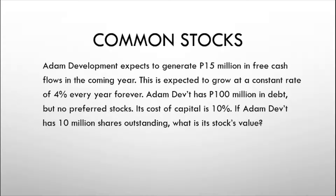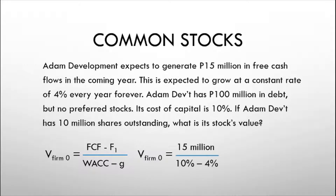To arrive at the value of the common stock, we should start with the value of the firm. We can use the Gordon growth model customized for firm value. The firm value in year 0 is equal to the free cash flows to the firm in year 1 divided by WACC minus the constant growth rate. This equals 15 million divided by 10% minus 4%, which gives us a firm value of 250 million pesos.